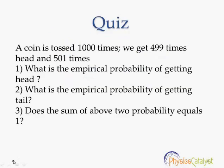Quiz number 1. A coin is tossed 1000 times. We get 499 times head and 501 times tail. There are 3 questions asked for this problem.